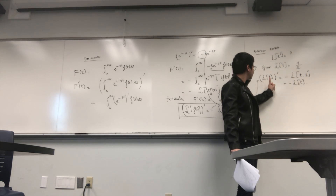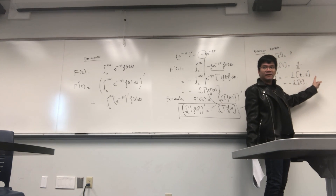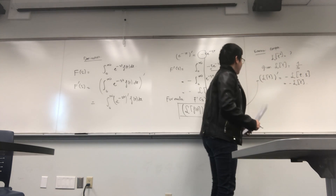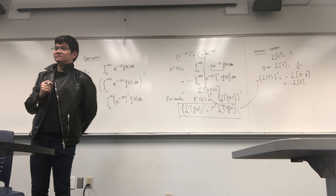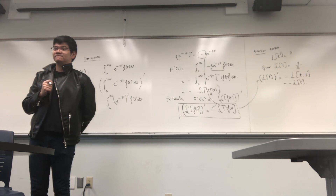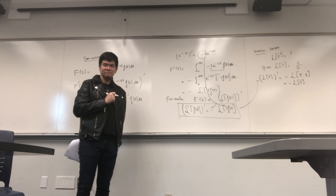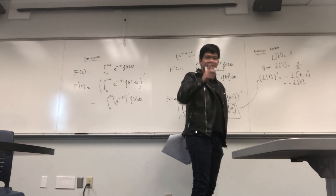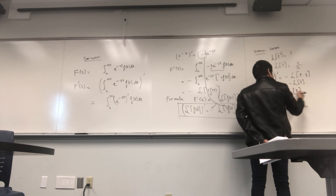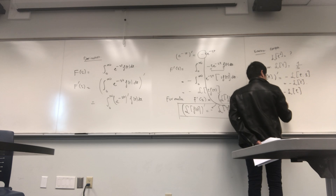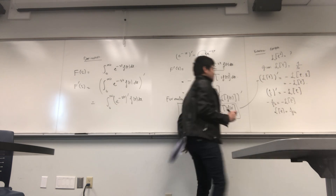Using the formula for f = 1: the derivative of L{1} equals minus L{t·1} = minus L{t}. The derivative of 1/s is −1/s². So −1/s² equals −L{t}, which means L{t} = 1/s².